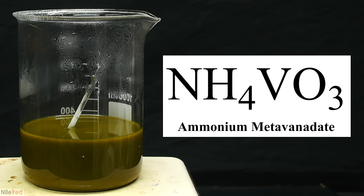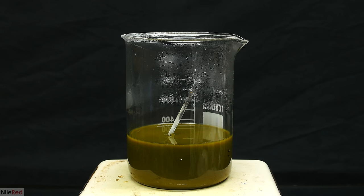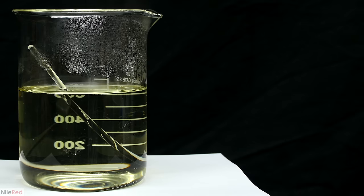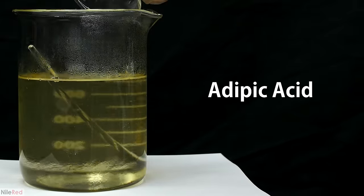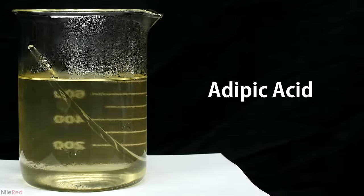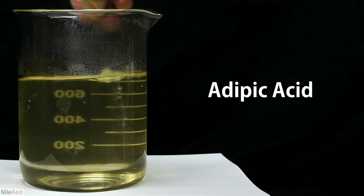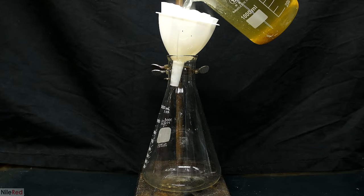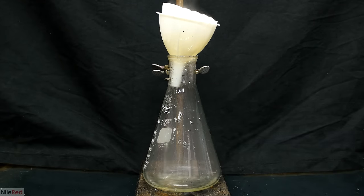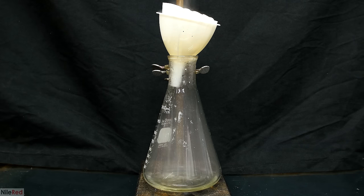Ammonium metavanadate is a vanadium-based white inorganic powder with the formula NH4VO3. Its two main uses are as an intermediate in vanadium purification and as a catalyst in chemical reactions. I plan to use it for the latter reason, to catalyze the oxidation of cyclohexanol to adipic acid. Adipic acid is a precursor to nylon, and I think it might be cool to do some polymer chemistry.